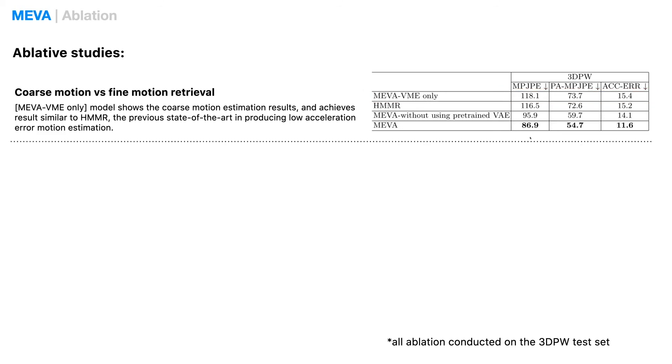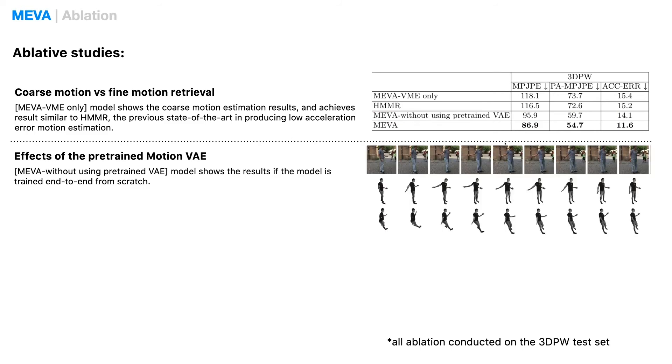MEVA also benefits from using a pre-trained motion VAE's latent space. Using this pre-learned subspace constrains the estimated motion sequences to be natural and plausible. The MEVA without using pre-trained VAE model shows the result if the model is trained end-to-end from scratch. Here, we can see the model achieves worse performance and can also result in unnatural human gaits.